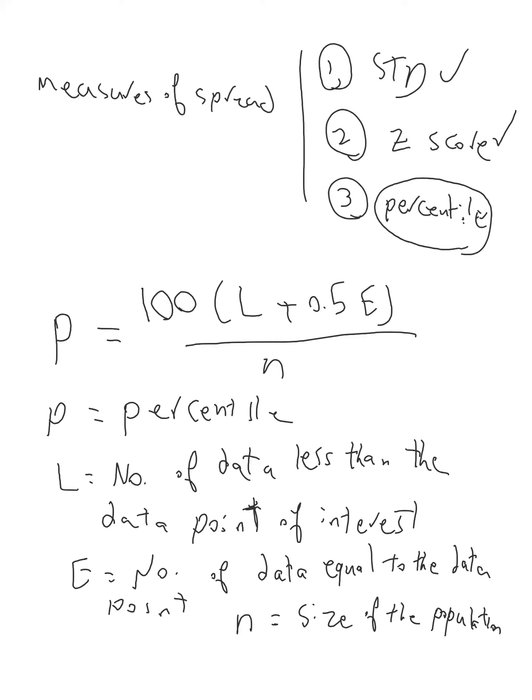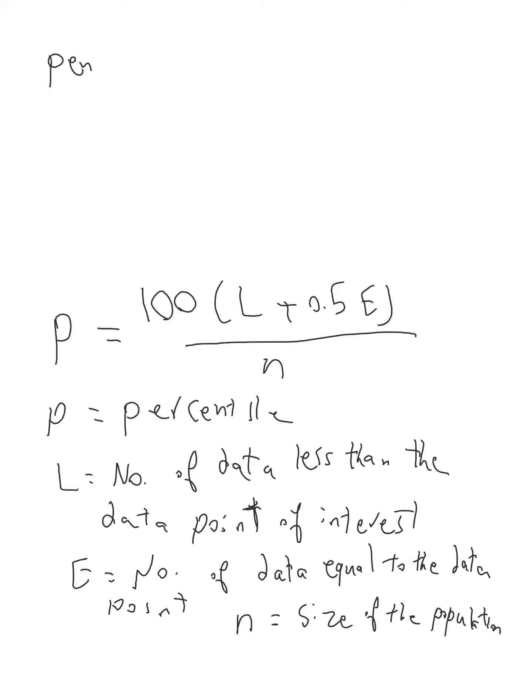Before proceeding to an example to understand, there is one more concept that I give the formula of it, then we move forward. It's called percentile rank. Show it with R, which equals p over 100 times N plus one.